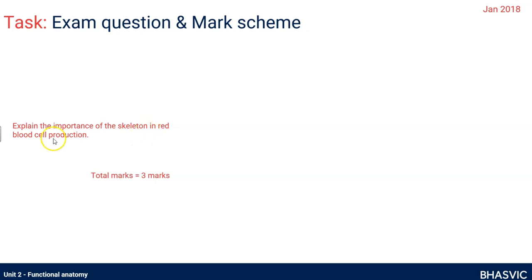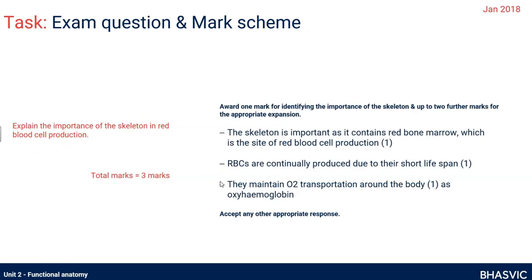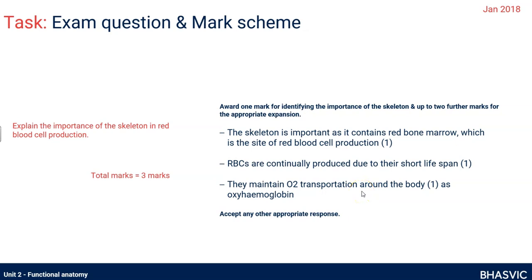Here's another example question: explain the importance of the skeleton in red blood cell production, for three marks. Red blood cells don't live long — we must continually replace them. The skeleton does that in the red bone marrow. Why is it so important? Because red blood cells are essential for transporting oxygen as oxyhaemoglobin around the body in the blood.